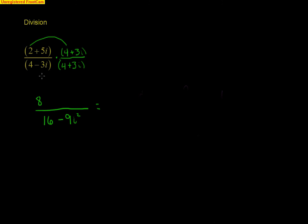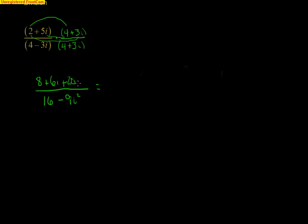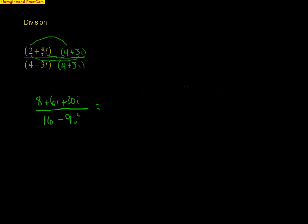So, I'll go back here and do the top and do the foil here. So, I know I'm going to have 8, and then 2 and 3i. That's going to be 6i. 5i and 4, that's going to be 20i. And, then last but not least here, I'm going to have the 5i and 3i, and that's going to be a plus 15i squared. Now, simplifying this, this is going to be 16 plus 9, so that's going to give me 25 on the bottom.